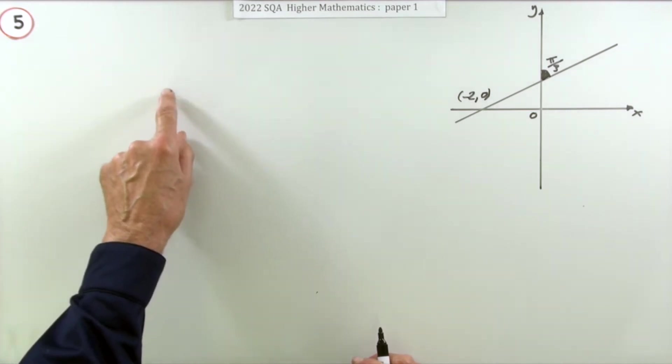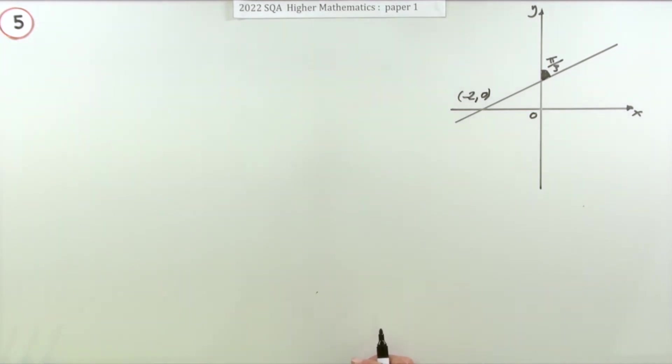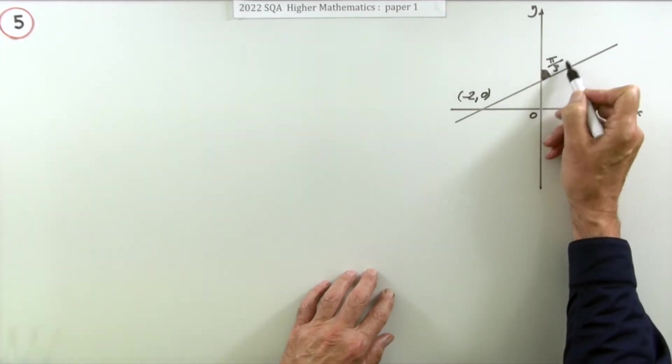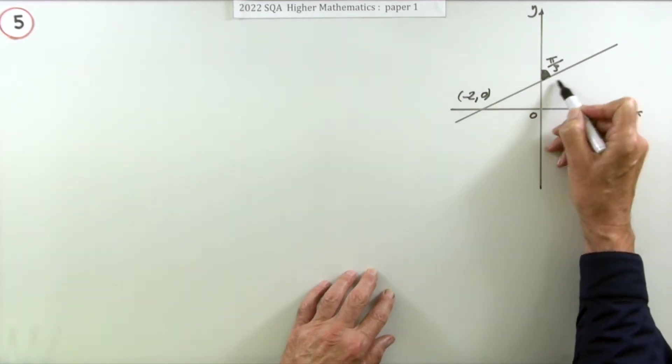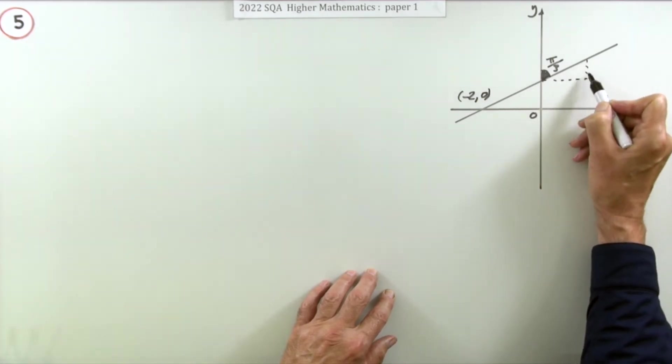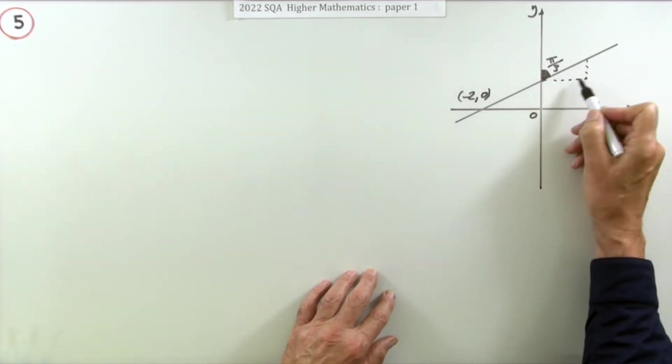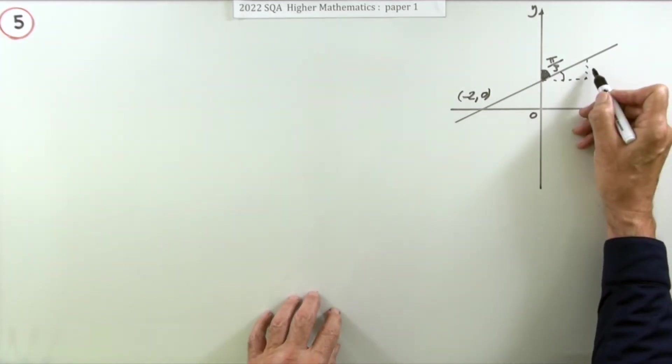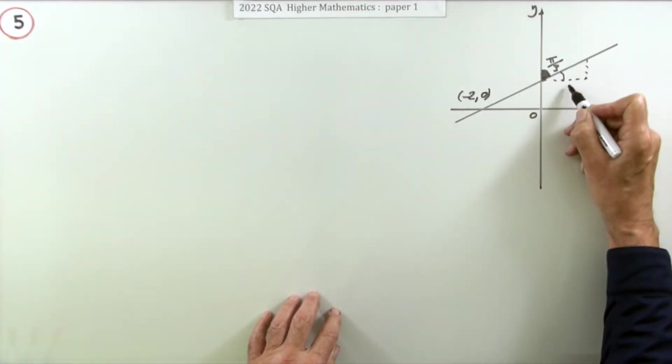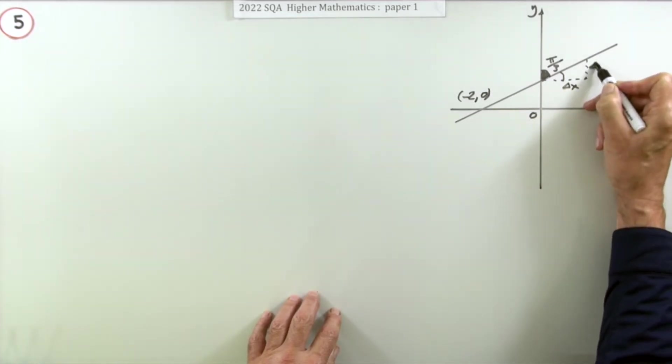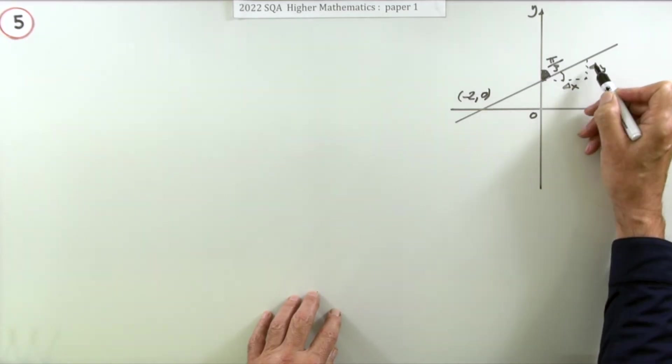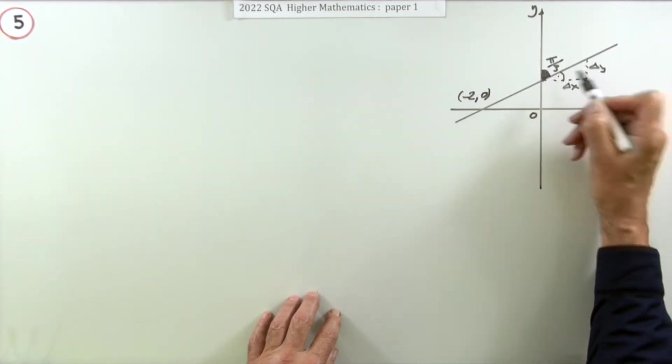You're going to be using y minus b equals m(x minus a). But to get the gradient, don't just use this π/3. The gradient means how many along and how many up. The angle for the gradient is this one here. The connection between the gradient and the angle is: the gradient—the distance up over the distance along—is the same as the tangent of this angle.